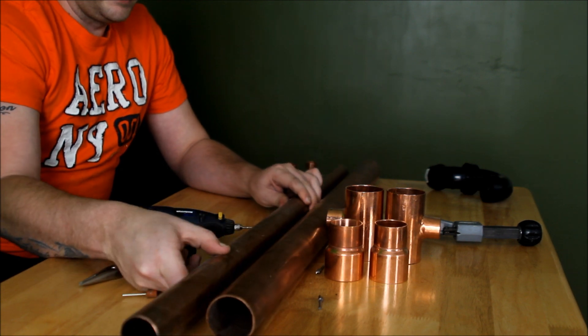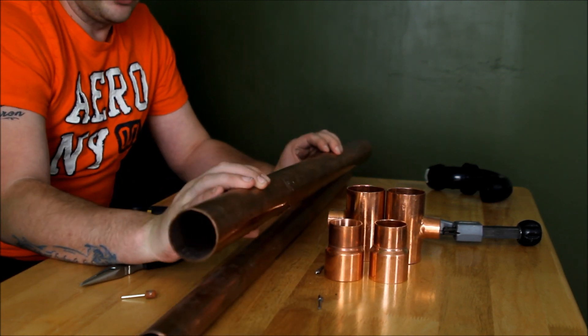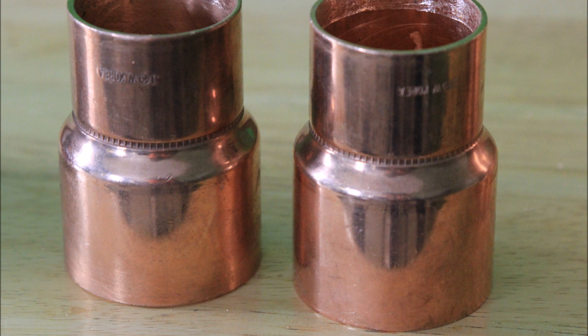Now see that edge stamped around the middle of the bushing? We need to remove that. We do that by using a Dremel tool.